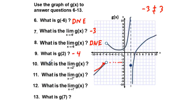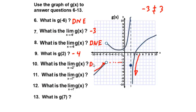Problem ten: the limit as x approaches 2 from the positive side of g of x. Approaching from the right, the graph appears to have a vertical asymptote at x equals 2. So the limit as x approaches 2 from the right does not exist.